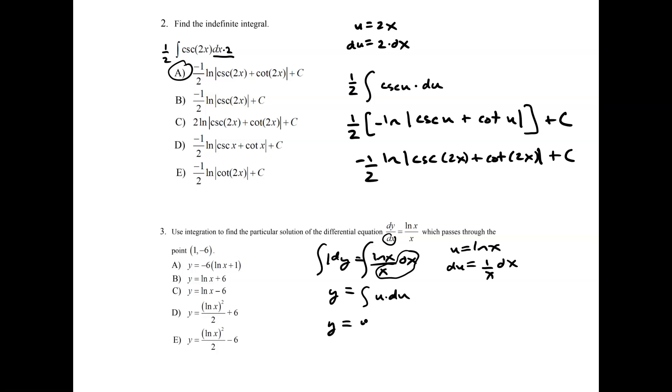And so we have y is equal to u squared over 2 plus c. Back substitute for u. And we end up with ln of x quantity squared all over 2 plus c.